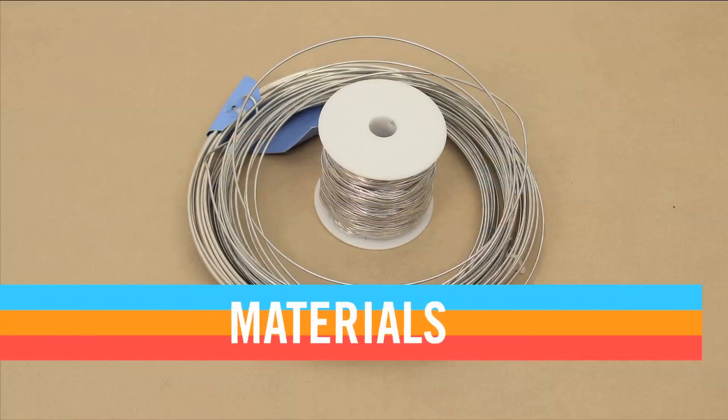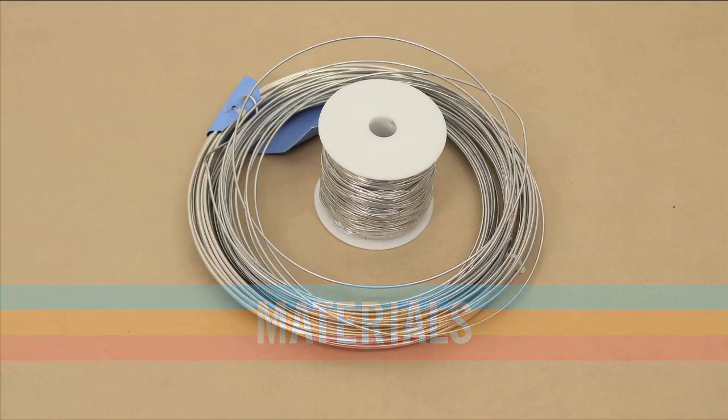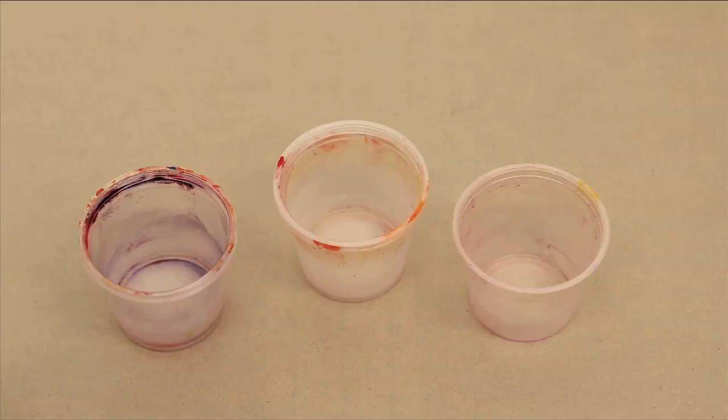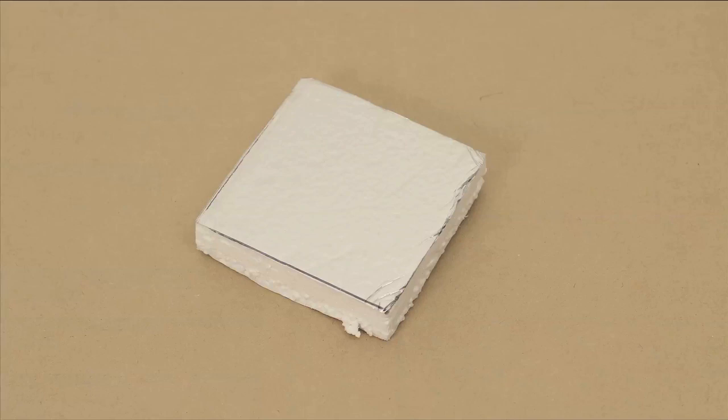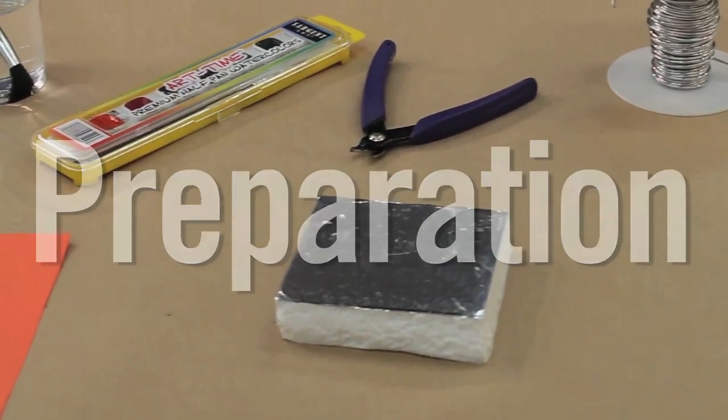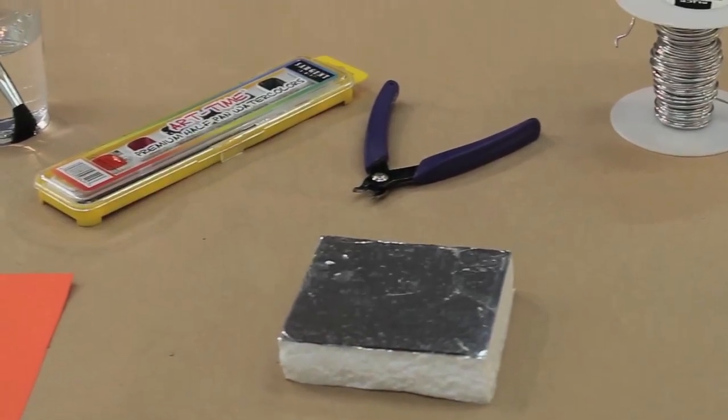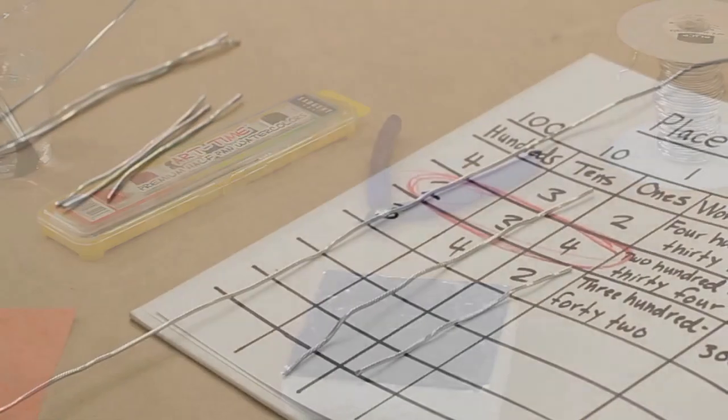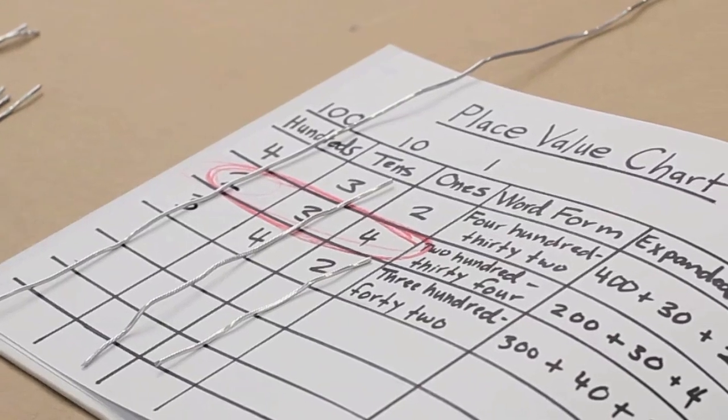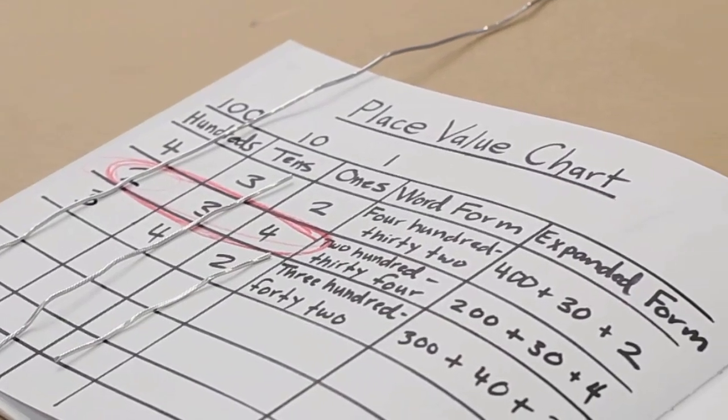For this lesson, you'll need aluminum wire, salad macaroni, scrap paper, watercolors and brushes, water cups, and four-inch squares of insulation foam, like you would find at a housing supply store. For preparation, cut the insulation foam into four-inch squares, and cut the aluminum wire into different size lengths: 25-inch lengths, 12-inch lengths, and 6-inch lengths.